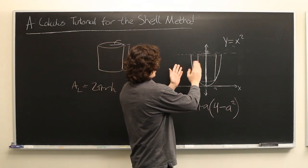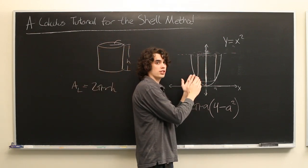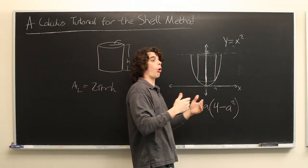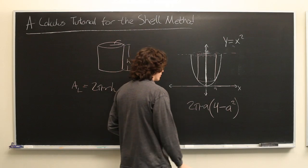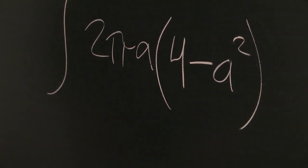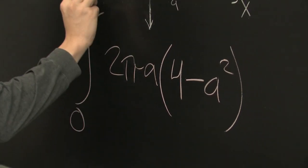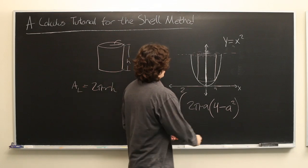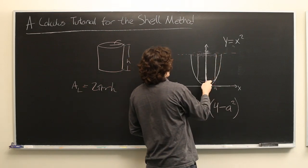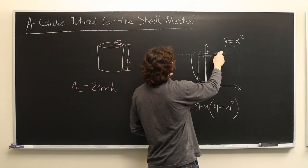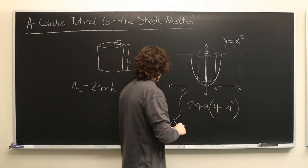That is the lateral area of one cylindrical shell, but we want all of the cylindrical shells. So in order to do that, we integrate. Take the integral from 0 to 2, since it is at the point x equals 2 that the parabola y equals x squared crosses the line y equals 4.